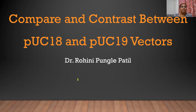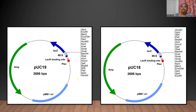Welcome. Today we are going to learn about the compare and contrast between the pUC-18 and the pUC-19 vectors. Both of these vectors are E. coli cloning vectors, and they also allow the manipulation of foreign DNA fragments.